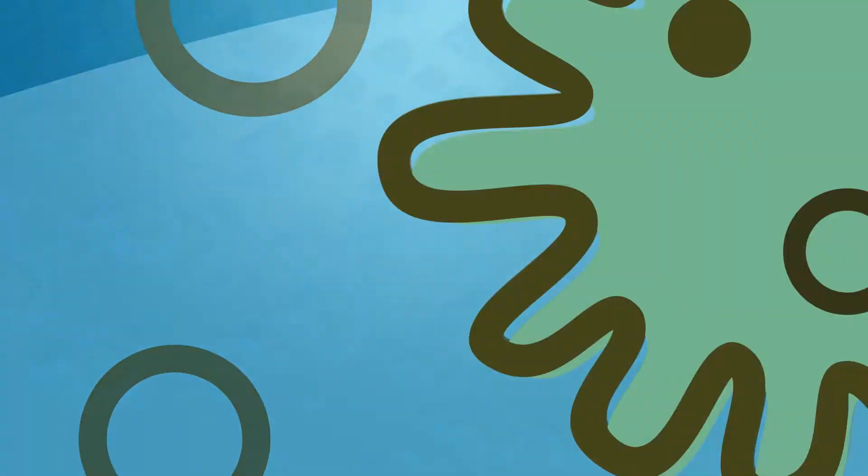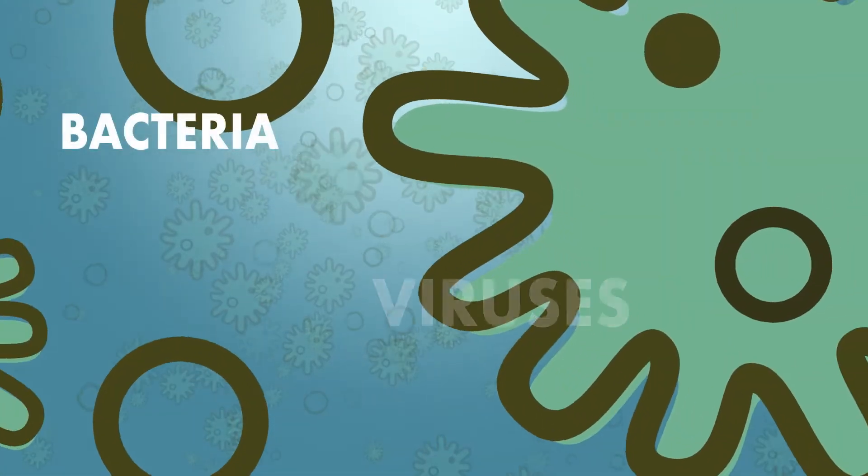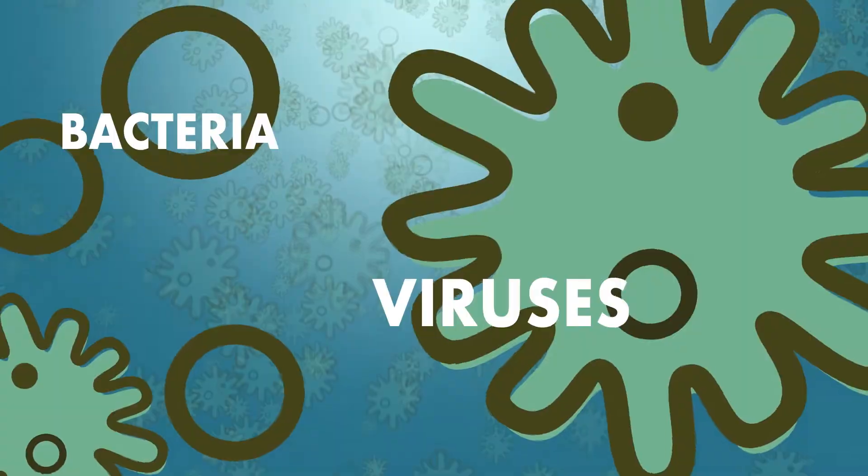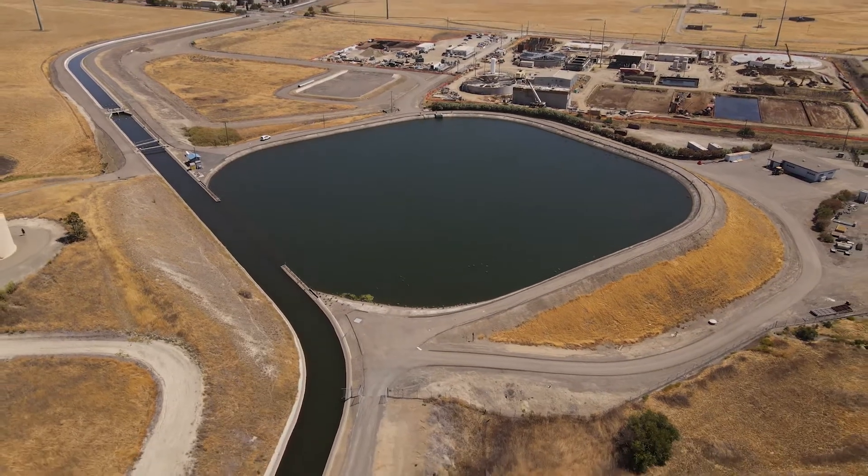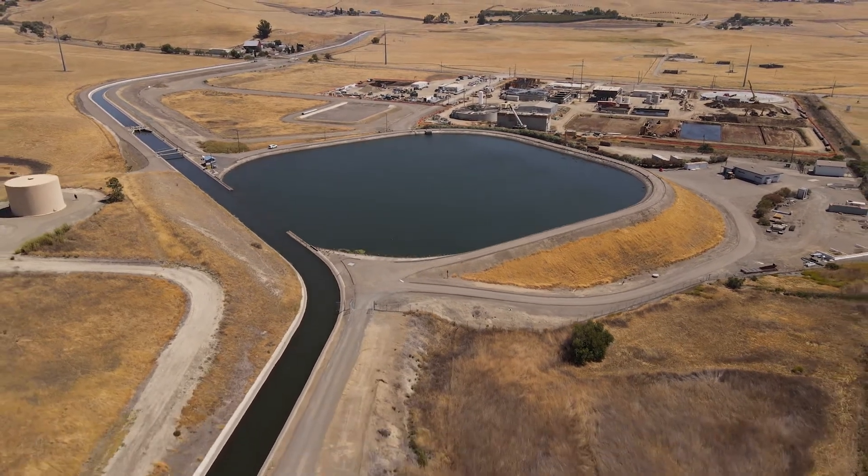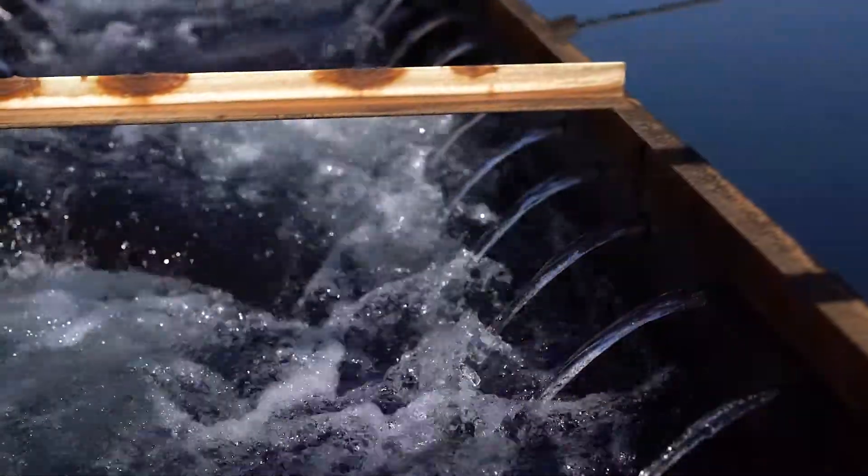Meanwhile, untreated surface water comes into our plant, and it may contain contaminants like bacteria and viruses. Algal blooms tend to grow in surface water exposed to sun, giving water an earthy or musty taste and odor, which ozone gets rid of.